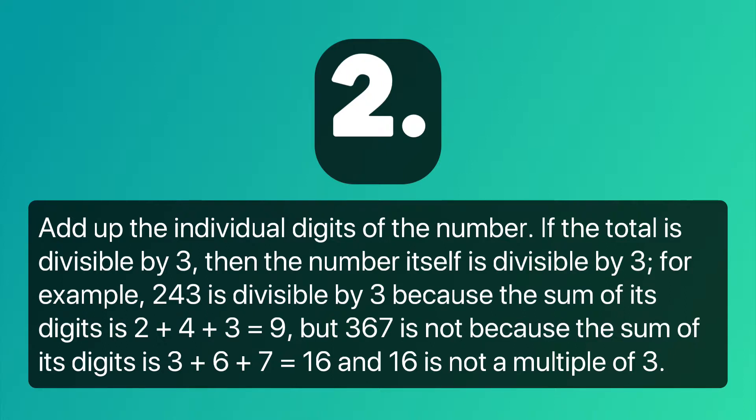But 367 is not divisible by 3, because the sum of its digits is 3 + 6 + 7 = 16, and 16 is not a multiple of 3.